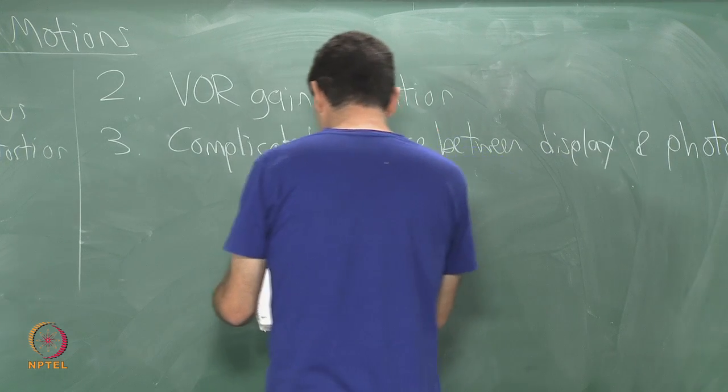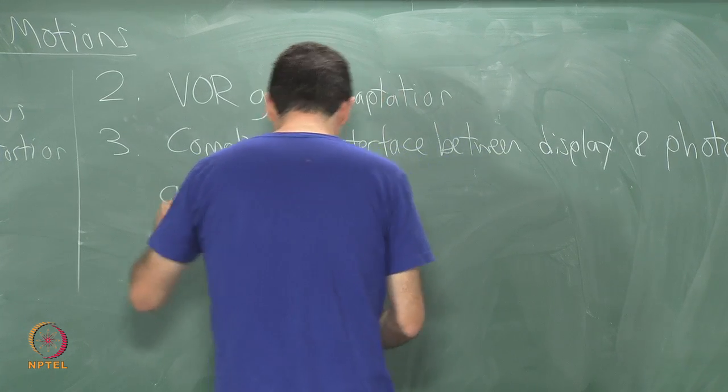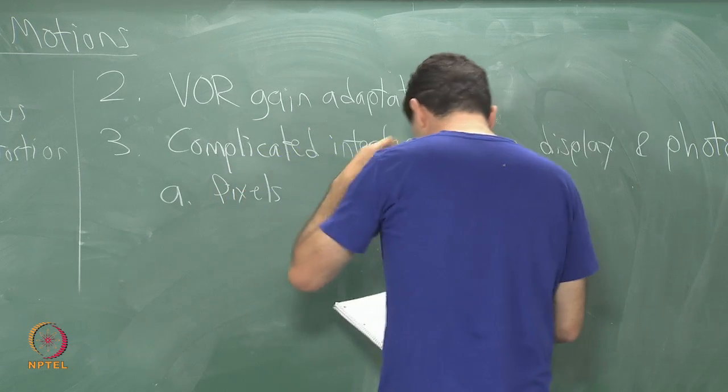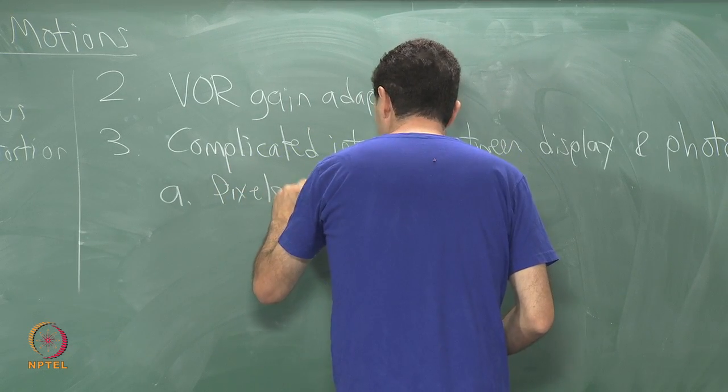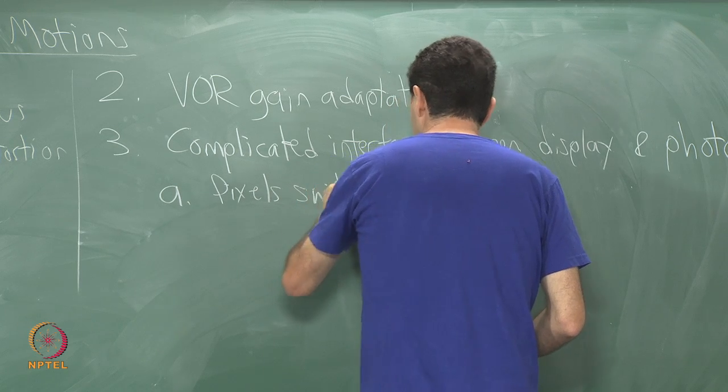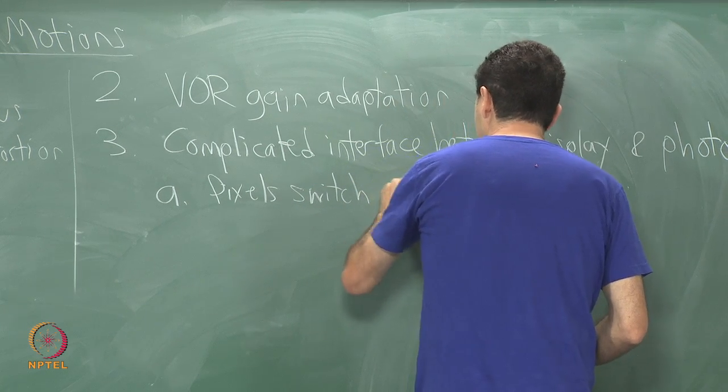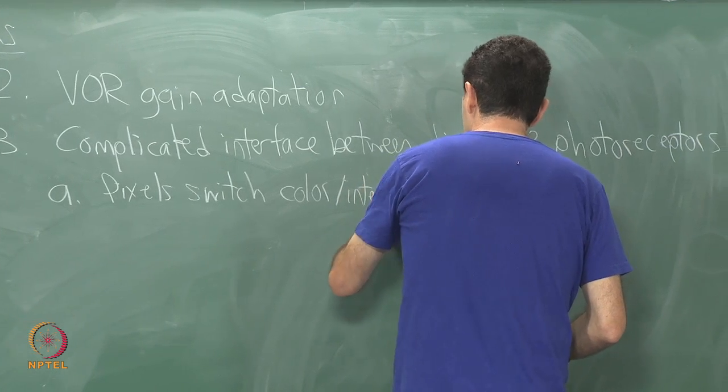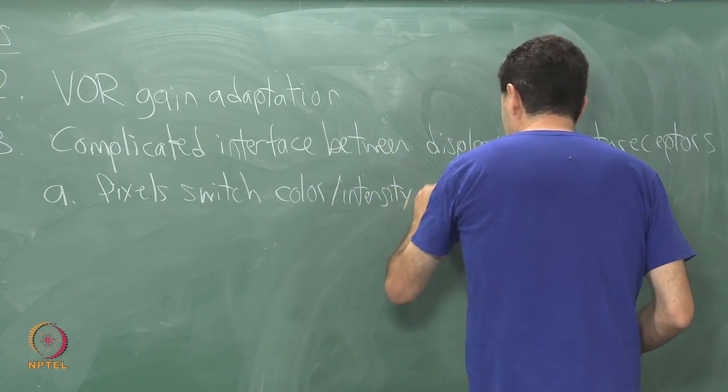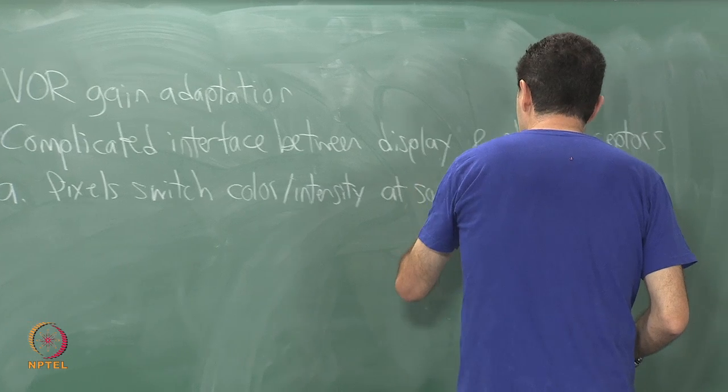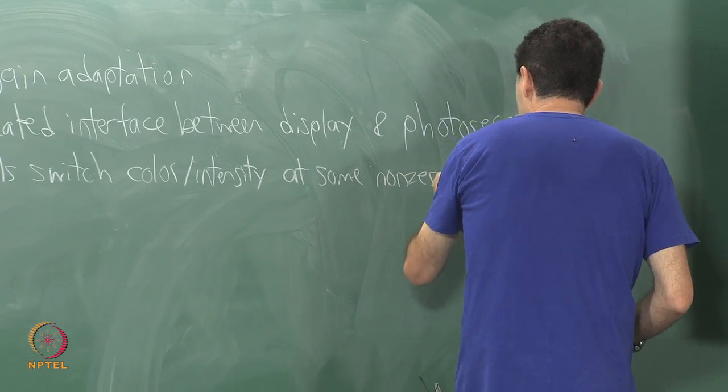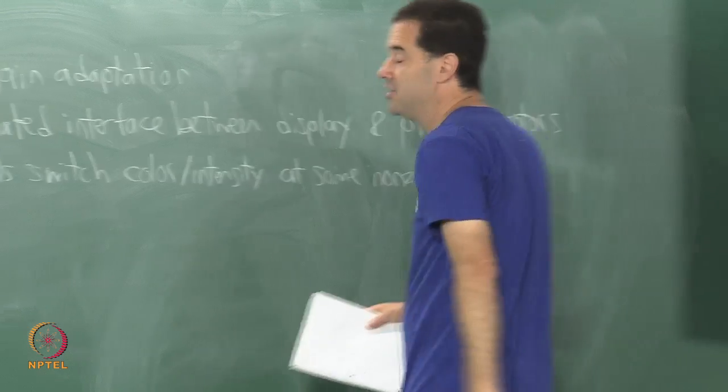For example, the pixels on the display switch their color or intensity at some non-zero rate, in other words it is not instantaneous.